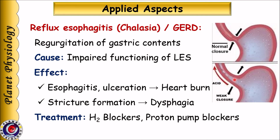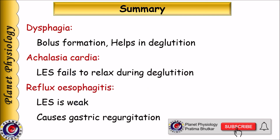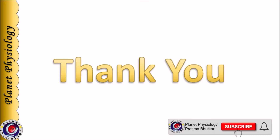To summarize: mastication is important for bolus formation and hence deglutation. Deglutation takes place in 3 stages — the oral stage is voluntary, whereas pharyngeal and esophageal stages are involuntary. The pharyngeal stage is the most important and guides the bolus from oral cavity to esophagus by coordinated sequential muscle contractions. Difficulty in deglutation is termed dysphagia. In achalasia cardia, the lower esophageal sphincter fails to relax, causing esophageal stasis. In reflux esophagitis, the lower esophageal sphincter is weak, leading to reflux of gastric contents. Thank you.